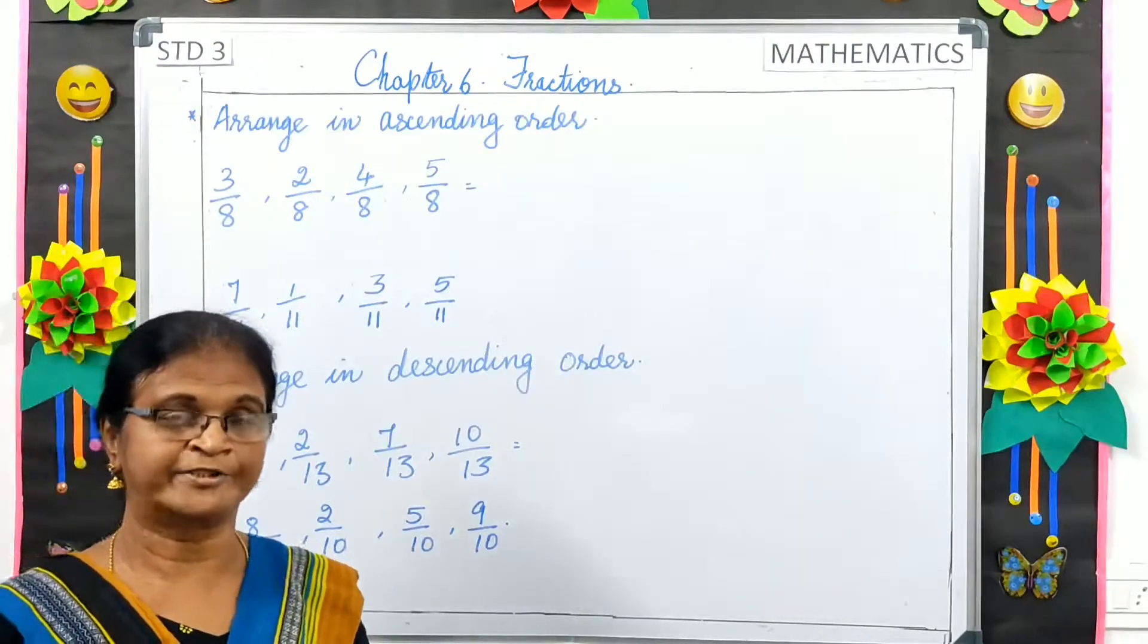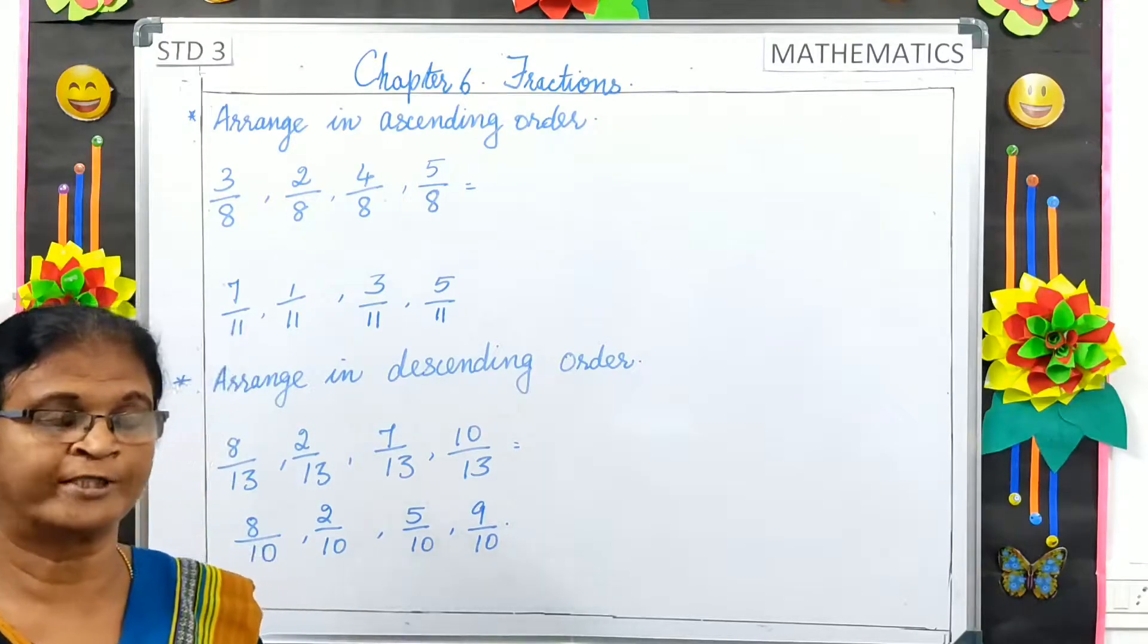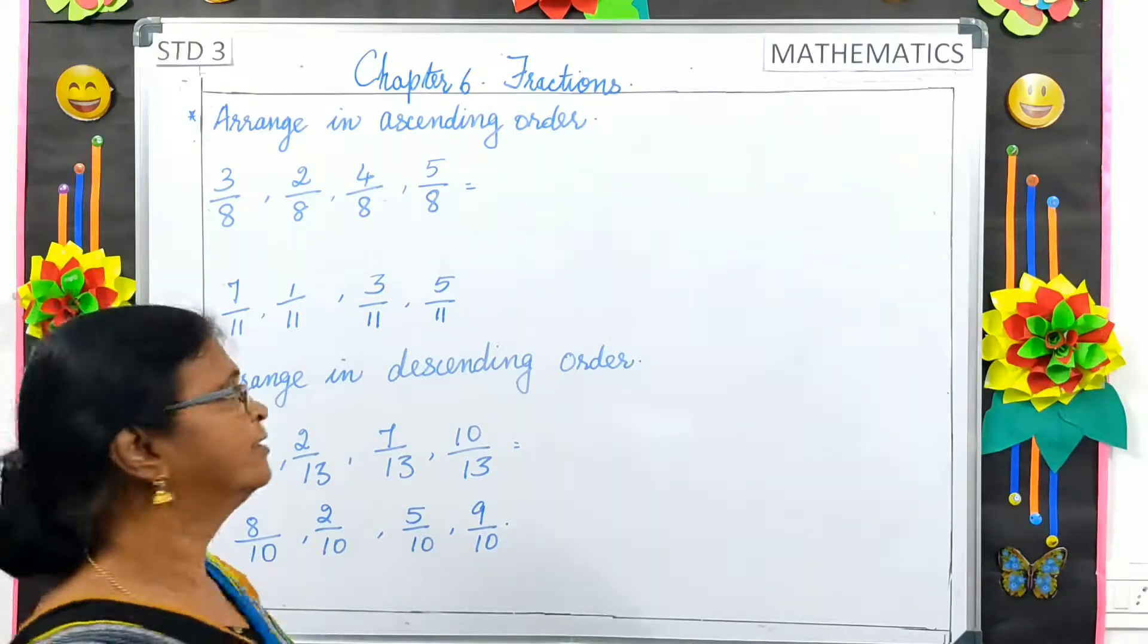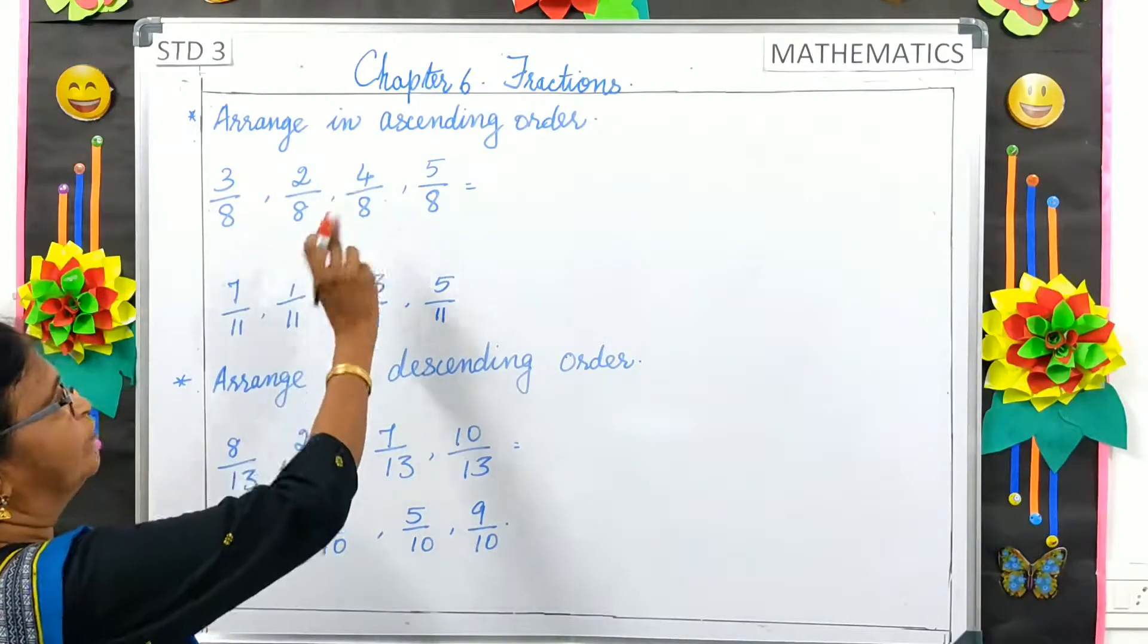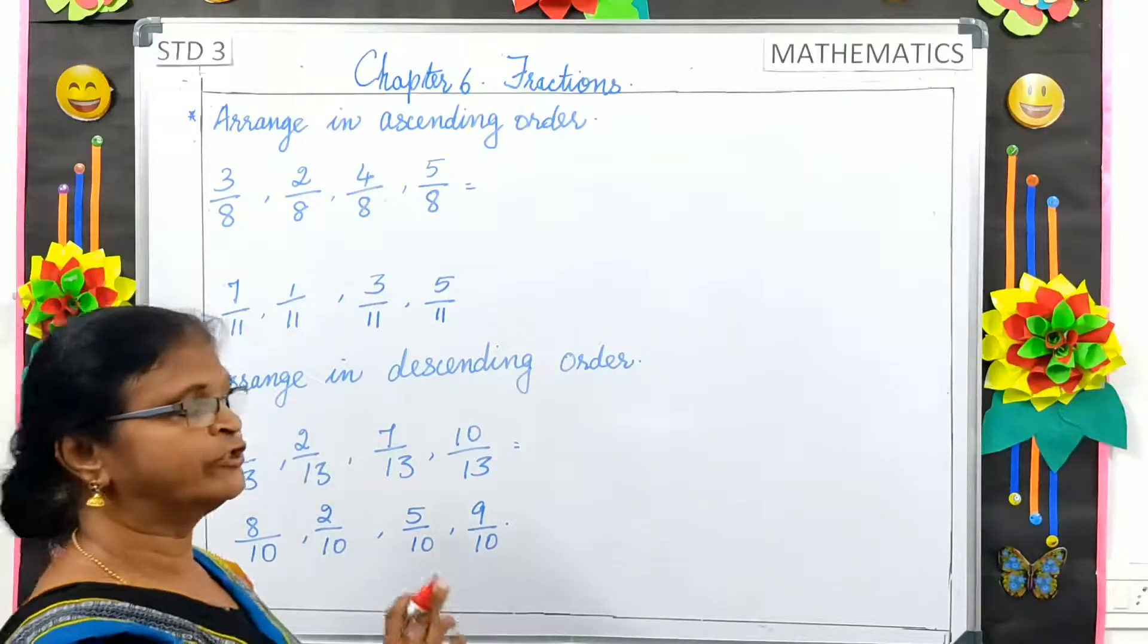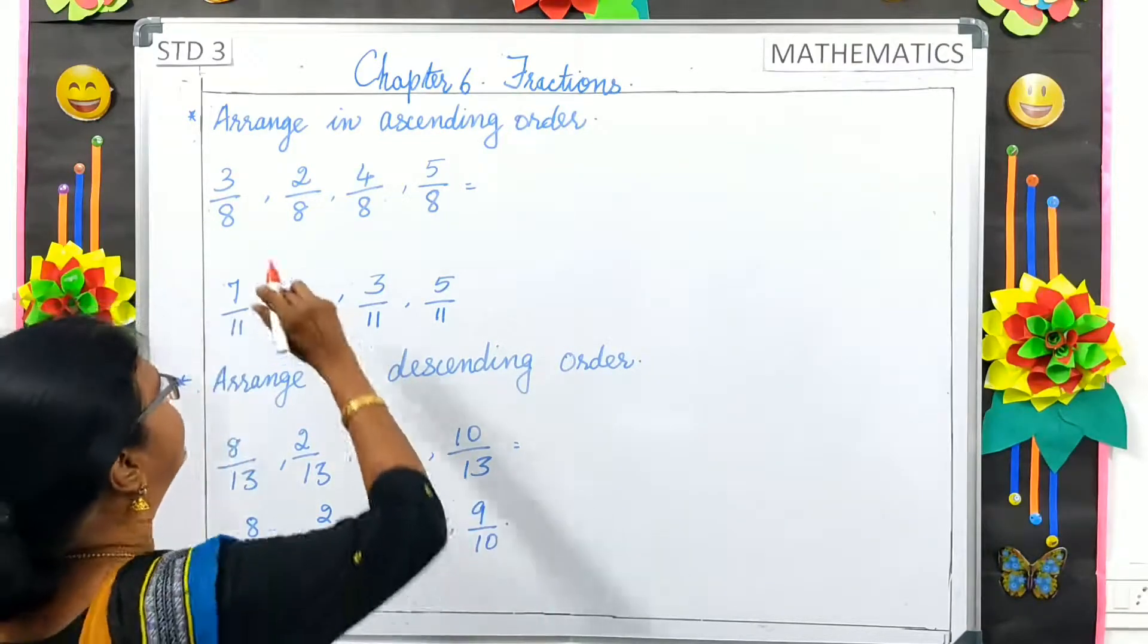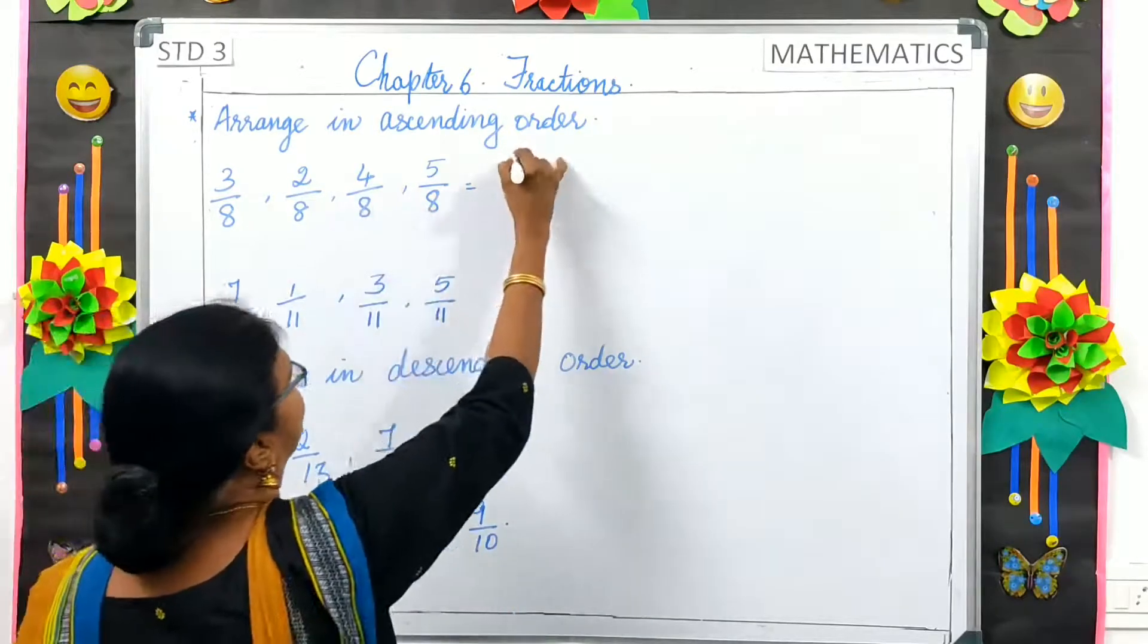Write in ascending order. Ascending means write from the smallest to the greatest. So here, 3 by 8, 2 by 8, 4 by 8, 5 by 8. 5 is the biggest numerator here, and 2 is the smallest. So we will start from 2 by 8.